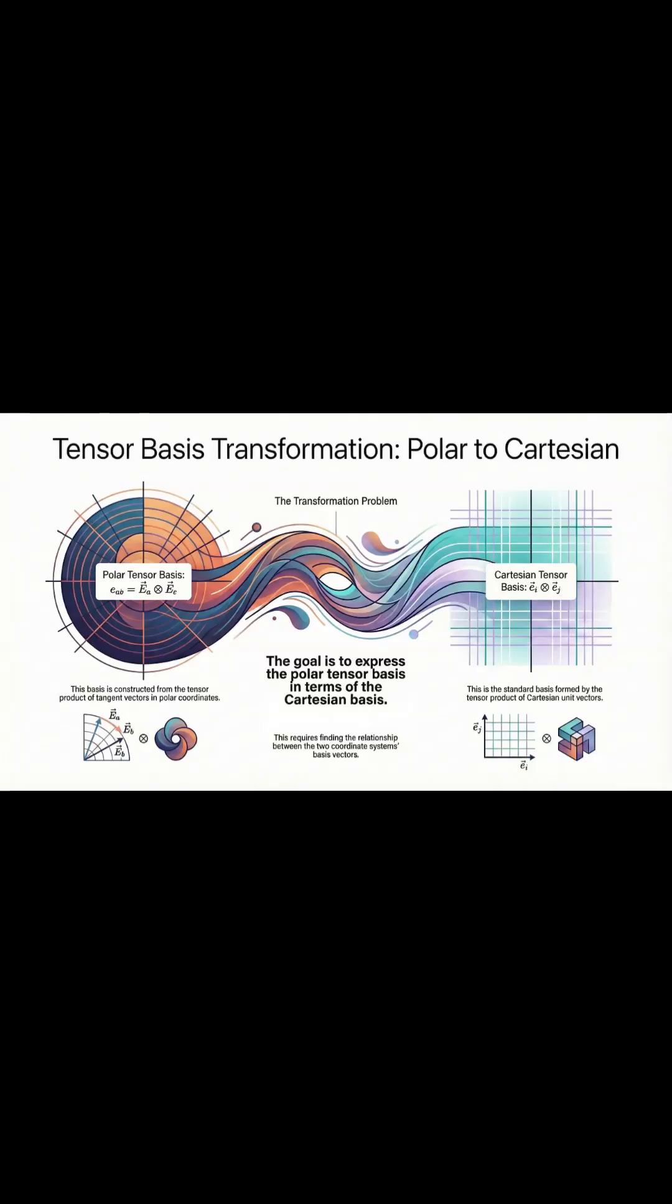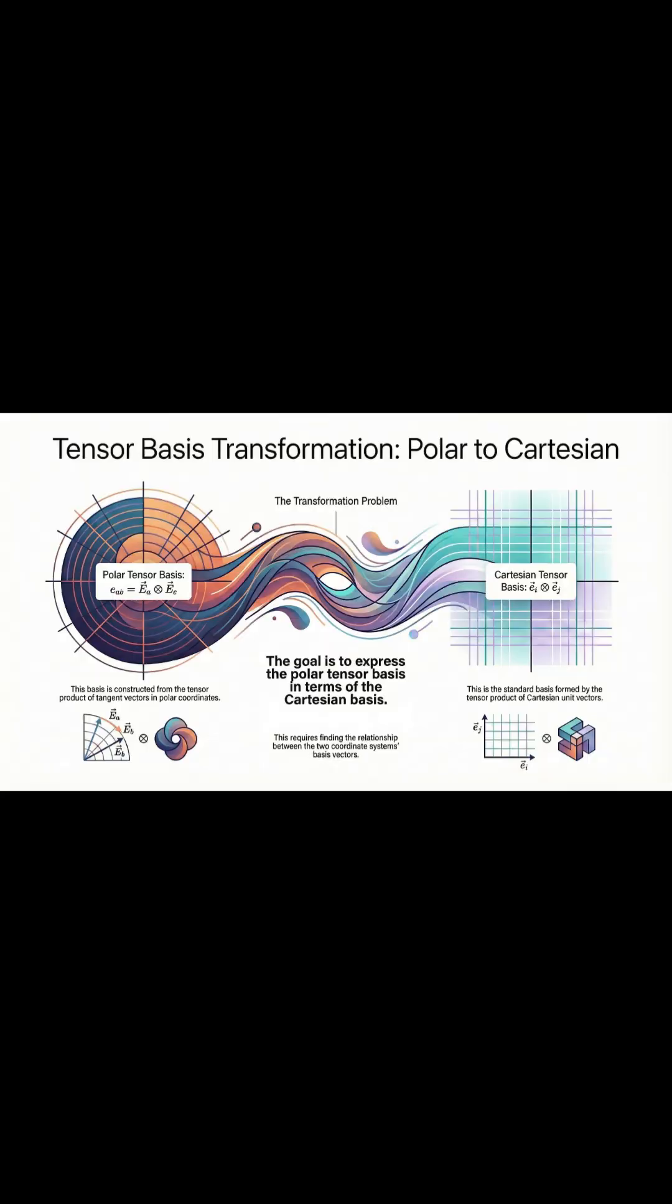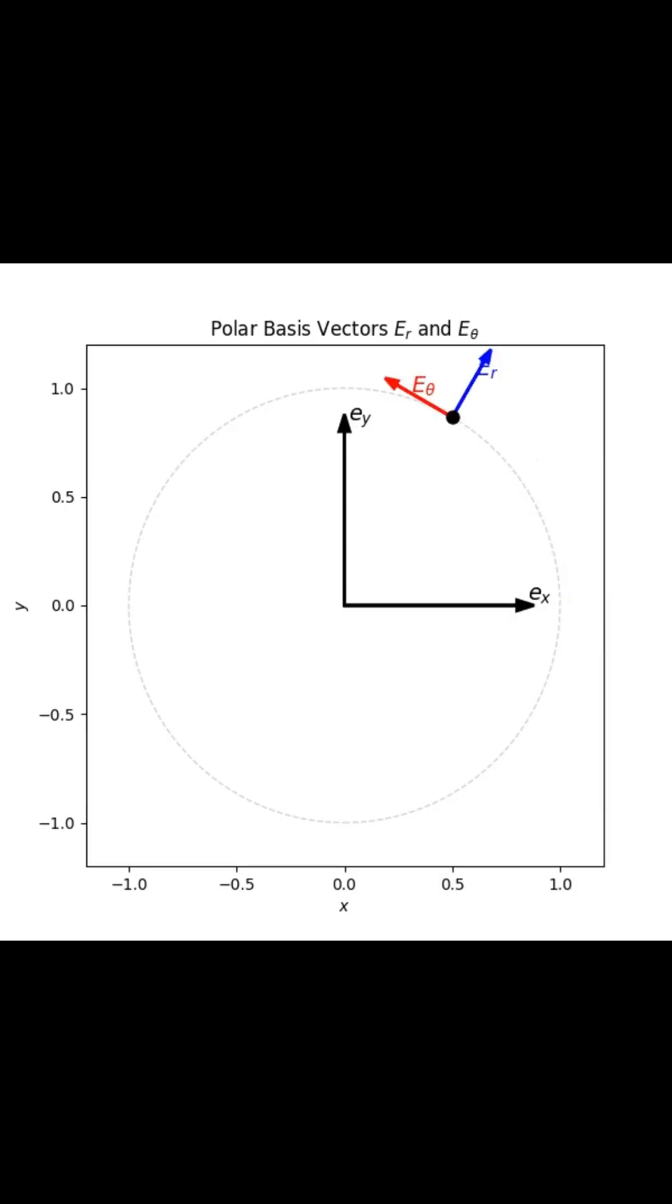This is a brief on tensor basis transformations. When you're tackling tricky physics problems, especially stuff that rotates, a single fixed coordinate system just doesn't cut it. You need some powerful math to switch between them. And that's where tensors come in. They're basically the tool we use to see how things change when our point of view is on the move.